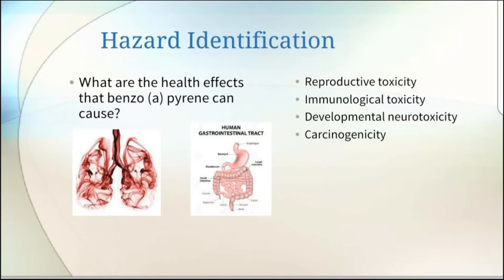Hazard Identification: What are the health effects that Benzo-A-Pyrene can cause? Benzo-A-Pyrene has a negative effect on the reproductive system, nervous system, and immune system, and it is a carcinogen.